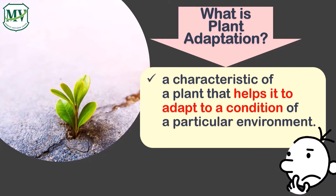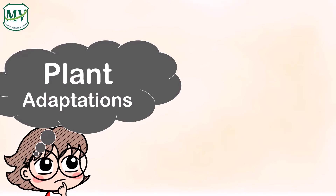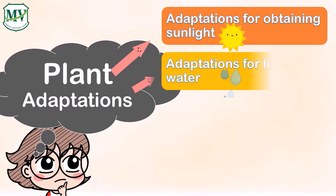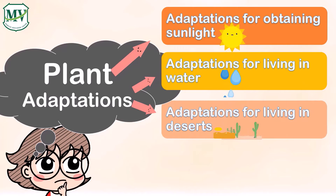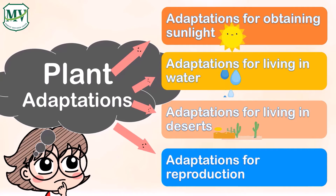Let us begin by defining what is plant adaptation. Plant adaptation is a characteristic of a plant that helps it adapt to the conditions of a particular environment. There are different adaptations that plants use to survive. First, it could be for obtaining sunlight. Second, for plants living in water. Third, for plants living in the desert. And lastly, it could be for reproduction. In this lesson, we will see various kinds of plants and their amazing adaptation skills.